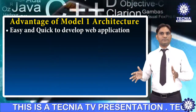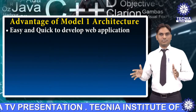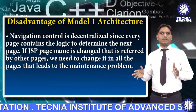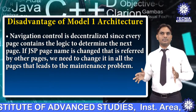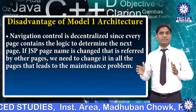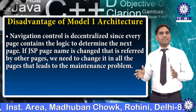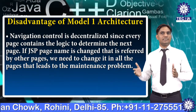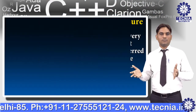Advantage of Model 1 architecture: it is easy and quick to develop web applications. Disadvantage of Model 1 architecture: number one, navigation control is decentralized. Since every page contains the logic to determine the next page, if a JSP page name is changed that is referred to by other pages, we need to change it in all the pages. That leads to a maintenance problem.